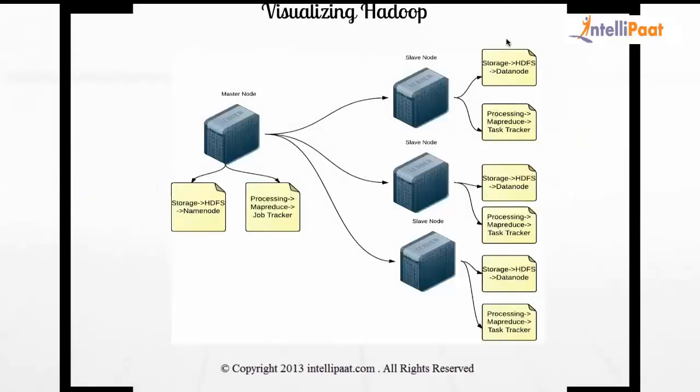Digging a bit deeper, Hadoop has one master node and multiple slave nodes — slave nodes can number in the thousands. On the master side, the component that takes care of storage is called the NameNode, and the one that takes care of processing is called the JobTracker. On the slave node, the component for storage is called the DataNode, and the one for processing is called the TaskTracker.